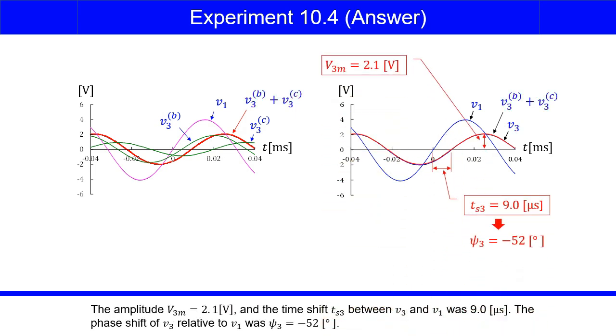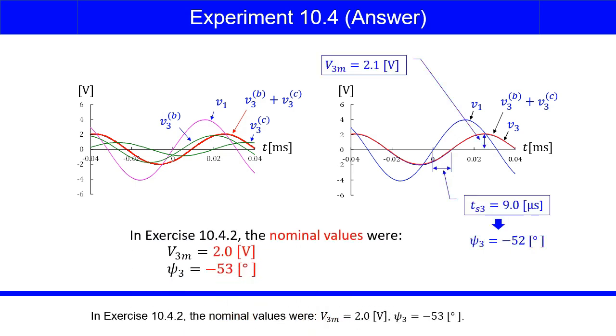The amplitude V3M was 2.1 volts, and the time shift TS3 between V3 and V1 was 9.0 microseconds. The phase shift of V3 relative to V1 was psi 3 equals negative 52 degrees. In exercise 10.4.2, the nominal values were V3M equals 2.0 volts and psi 3 equals negative 53 degrees.